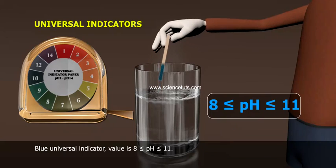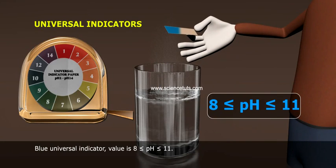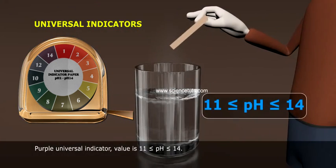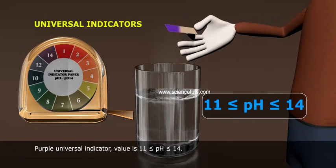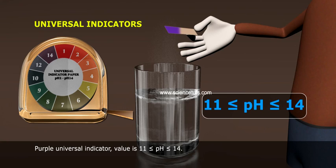Blue universal indicator value is 8 ≤ pH ≤ 11. Purple universal indicator value is 11 ≤ pH ≤ 14.